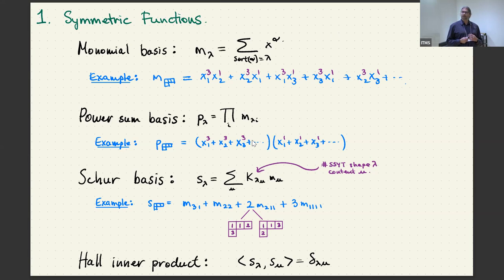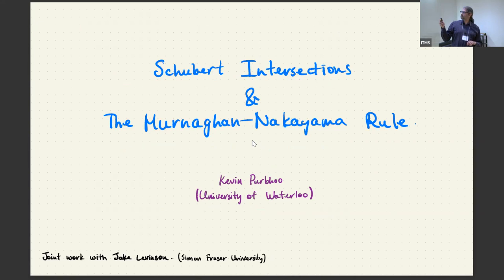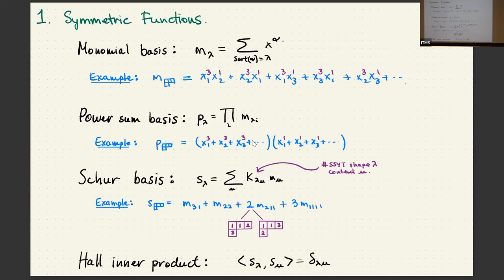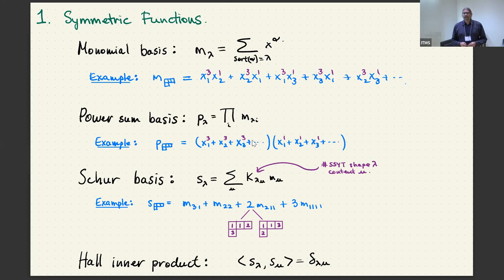Just take a monomial and symmetrize it. So m_lambda is the sum of all monomials which have lambda in the exponent. For example, m_{3,1} is x_1^3 x_2^1, and so does x_2^3 x_1^1, and x_1^3 x_3, and so on. I'm going to be working with symmetric functions in infinitely many variables here, but if you don't like that, you can just imagine that there's a suitably large finite number of variables.